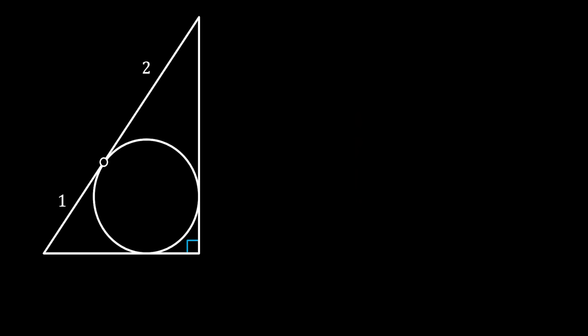We're going to start this method by first labeling all the vertices of the triangle as A, B, and C, and the center of our inscribed circle as O. Then we will also label the intersection point between the circle and the hypotenuse as D. Now let's pull the radius OD and label it as R.